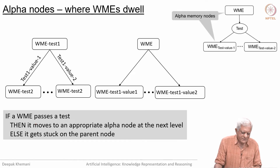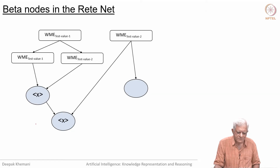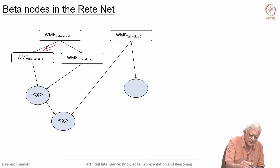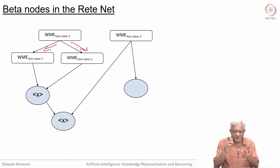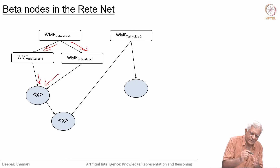If the working memory element passes the test, it moves on to the appropriate alpha node down the branch; otherwise it will get stuck on that node, which means the working memory may not have enough information we are looking for. The other kind of nodes are called beta nodes. Beta nodes capture the fact that two working memory elements — one going down the left path and another down the right path — will match the same rule: one matches pattern 1, one matches pattern 2, then they come together.